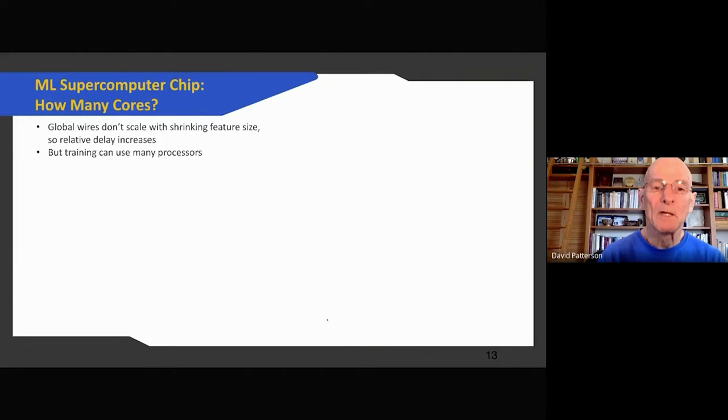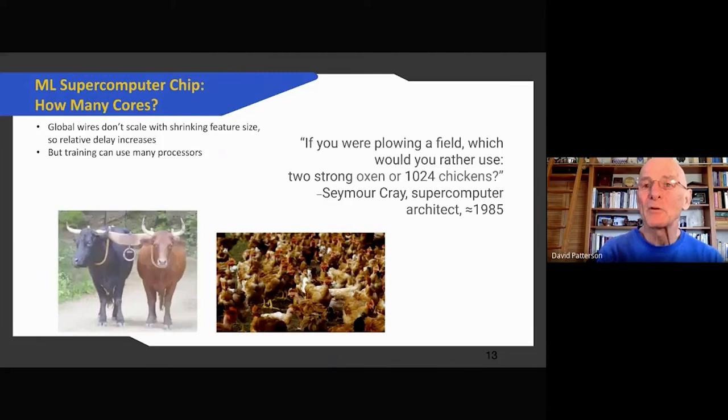Then the question is redesigning chip: how many cores per chip? For TPU v1 we had one core per chip, but GPUs can have 100 cores per chip. The challenge is with as the feature size gets smaller with more advanced semiconductor technology, the global wires that go across the chip don't scale, so the delay increases. That's an argument for not making too big a core chip. Now we know that training can use lots of processors. So where we went for advice is Seymour Cray, the greatest supercomputer architect of all time. When he was asked, he said if you're plowing a field, what would you rather use: two strong oxen or 1024 chickens? So we went with two strong oxen. The TPU v2 has two cores per chip to prevent the longer clock cycle, and we thought it would be much easier to do two bigger cores per chip rather than 1024 wimpy cores.